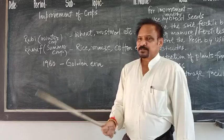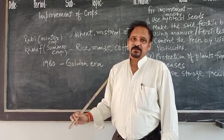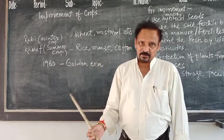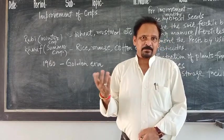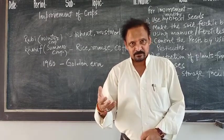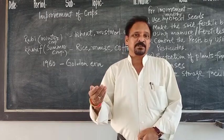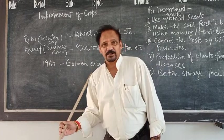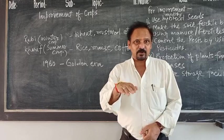In our country, 1960 is known as the golden era. Why? Because in that decade, in the 1960s, the overall production of both Rabi crop and Kharif crop increased multifold. Overall crop production increased significantly. And at that time, in 1960–1970, India became fully self-dependent.